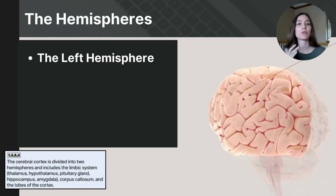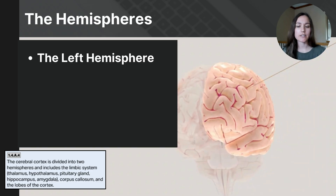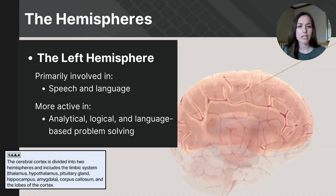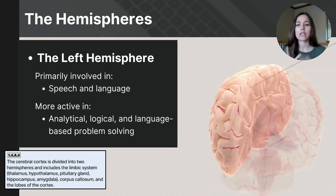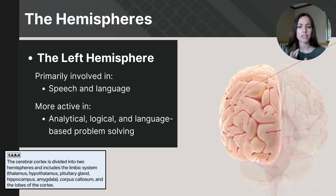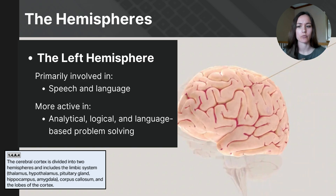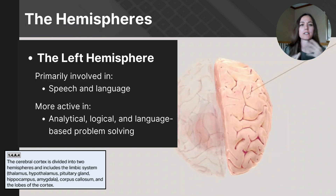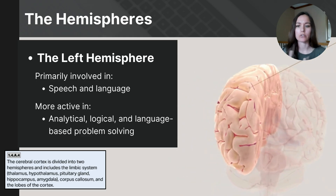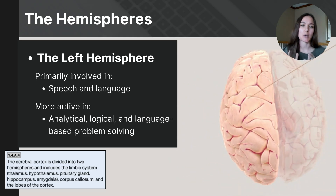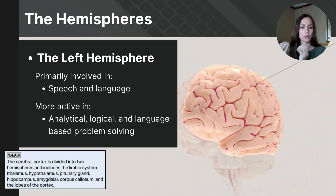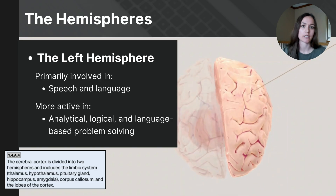The left hemisphere is located on the left side of the brain and is primarily responsible for language and communication, such as speech, writing, and comprehension. It is heavily involved in analytical thinking, making it essential for tasks requiring detailed analysis like problem-solving, mathematics, and scientific reasoning. The left hemisphere also processes sequential information and is key in understanding and producing structured language, including grammar and syntax, facilitating precise, linear, and methodical cognitive processes.